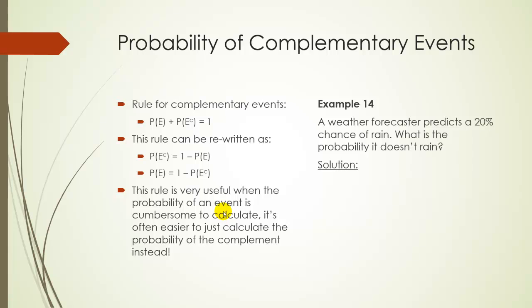You could probably do this in your head and you'd get 80%, but doing it with the formulas, the probability it rains is 0.2 and 1 minus 0.2 is just 0.8. So the probability it doesn't rain is 0.8. There's an 80% chance it doesn't rain.